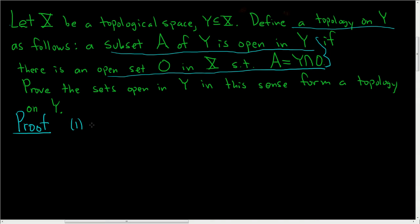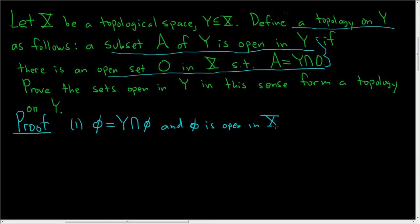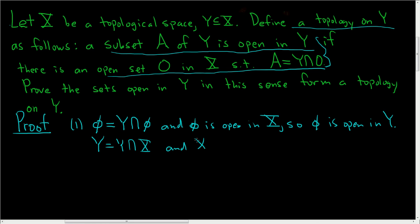The first condition we have to show is that both the empty set and Y are open in Y. To show that the empty set is open, we write: empty set equals Y intersected with the empty set. The empty set is open in X because X is a topological space, so this shows the empty set is open in Y. Similarly, Y equals Y intersected with X, and X is open in X because X is a topological space, so Y is open in Y.